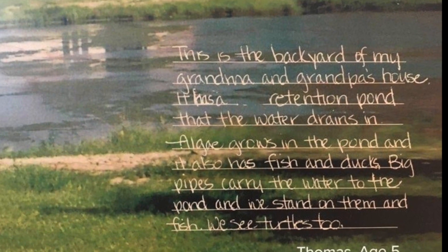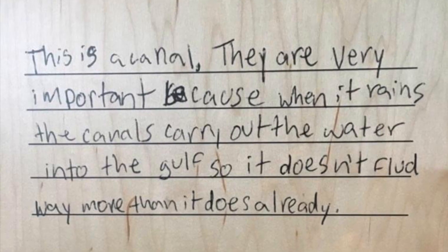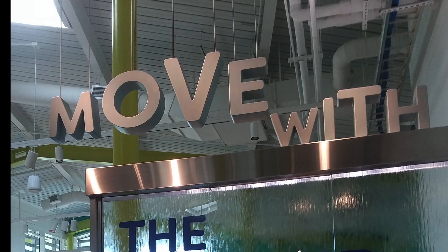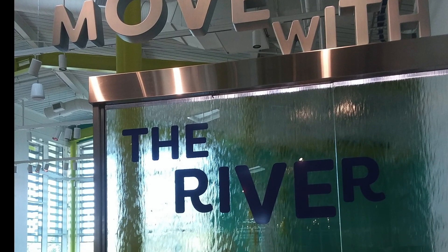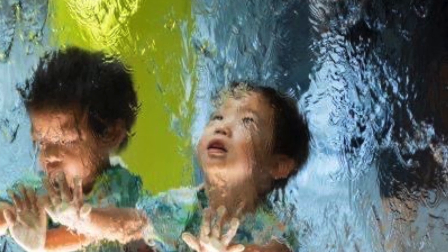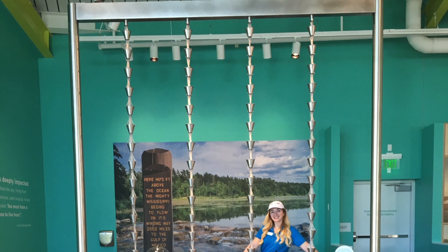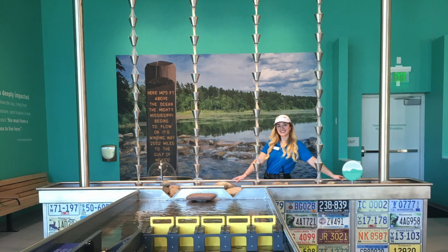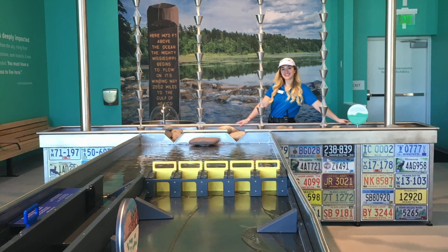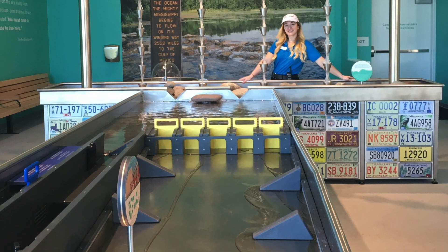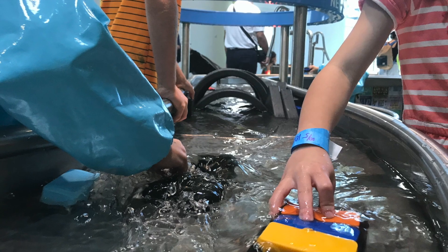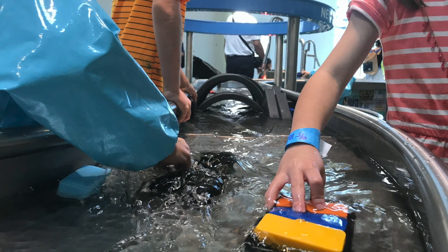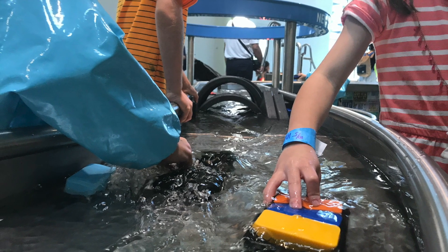Water is all around us. While playing around your house, outside, or in our Move with the River Gallery, you may find yourself wondering: where does all this water come from? The source of the Mississippi River is all the way in Minnesota at Lake Itasca. The Mississippi River also gets a lot of water from tributary rivers — other rivers that feed into the Mississippi River, like the Ohio River and the Arkansas River.